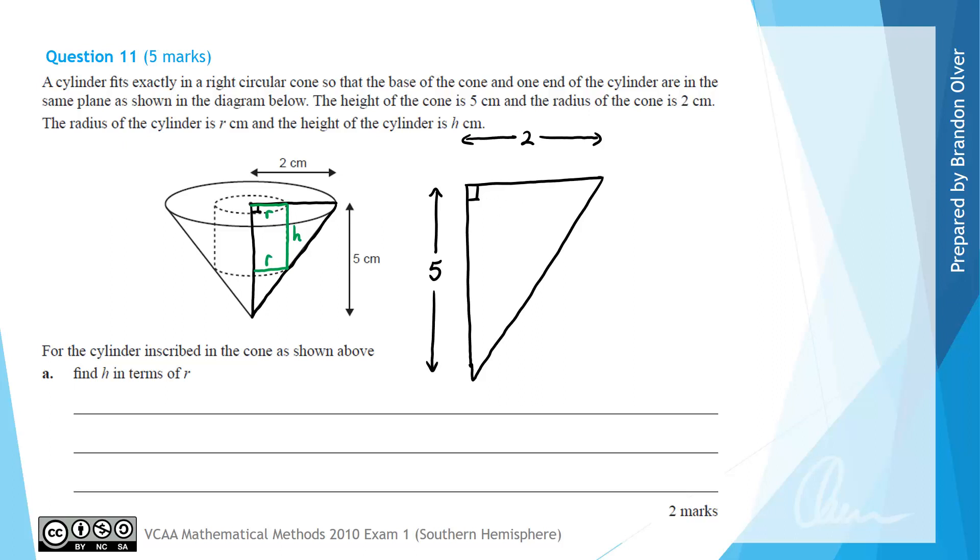And now the reason why I'm taking so much time to set this up is you'll see in the examination advice in a moment that this question was very poorly done. So we're going to put our cylinder in now which goes in like this and it shares a right angle. We know that that length there was h. We knew that this was r and this was also r which means that this length here is going to be represented by 2 subtract r.